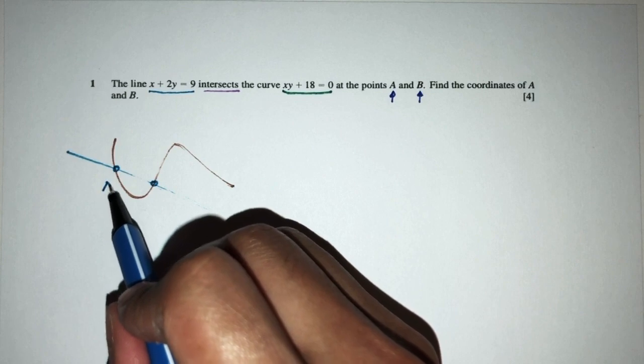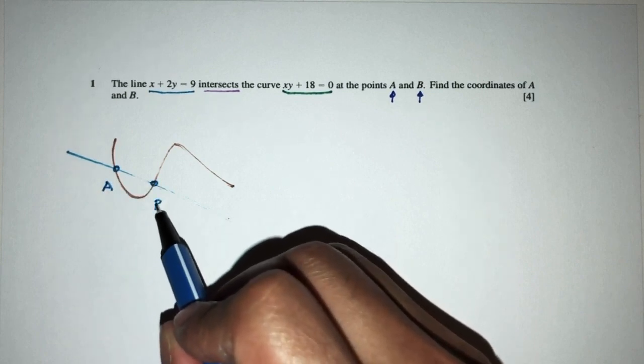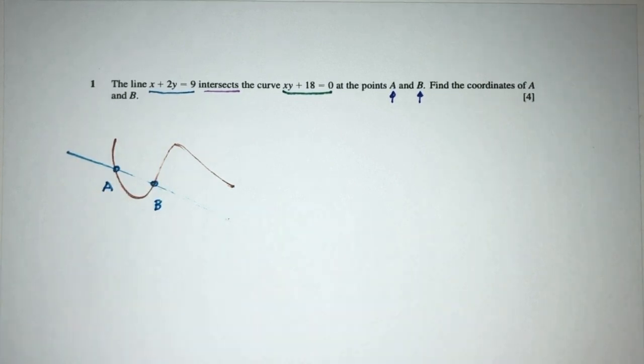The first one is the point A and the point B. So, the idea behind this is we just have to find the point A and B. And as we can see, they are the points of intersection.